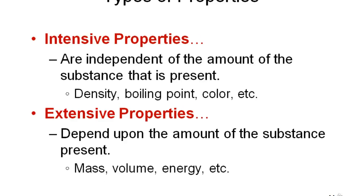Another way of classifying properties: intensive and extensive. Intensive properties are independent of the amount of substance you have. For example, the boiling point of water is the same whether you boil one glass or one liter — that is an intensive property. Whereas extensive properties depend upon the amount of matter. The mass of one glass of water versus one gallon is different, and volume similarly depends on the quantity you have — those are extensive properties.